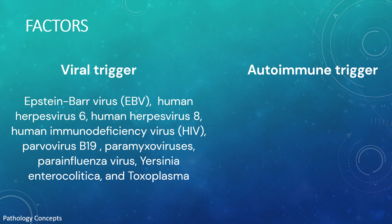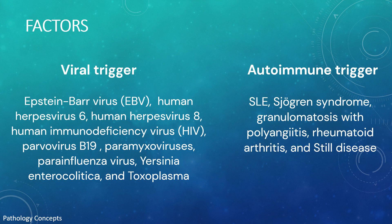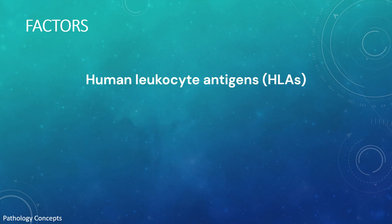Kikuchi Fujimoto disease has been associated with various autoimmune conditions like SLE, Sjögren's syndrome, granulomatosis with polyangiitis, rheumatoid arthritis, and Still's disease. SLE is the most commonly associated autoimmune condition with Kikuchi Fujimoto disease.